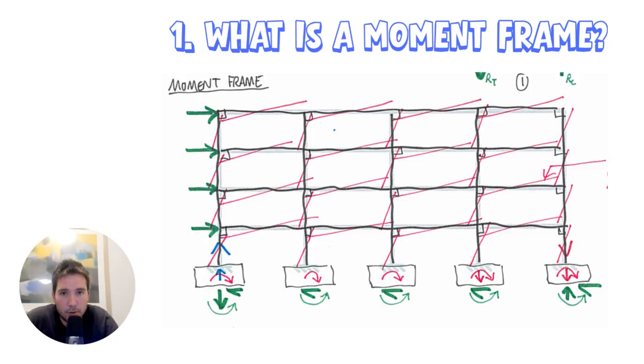So what is a moment frame? Essentially it's a lateral stability system. If we think of the three main lateral stability systems in buildings, we've got shear walls which is a previous video, we've got moment frames which I'm about to discuss now, and a future video will be braced systems. A moment frame is a lateral stability system where the lateral stability depends on the moment in between a beam and a column. That's essentially what provides rigidity of a structure in the lateral direction.